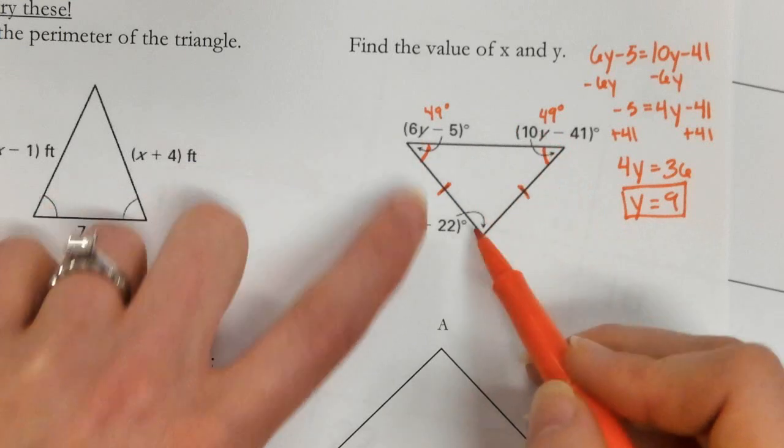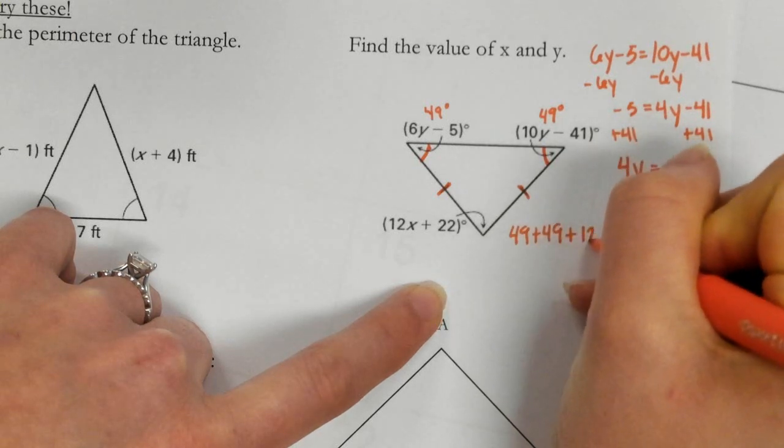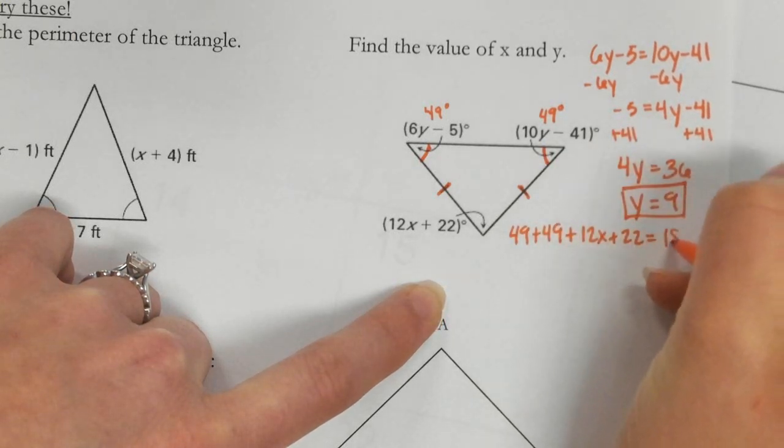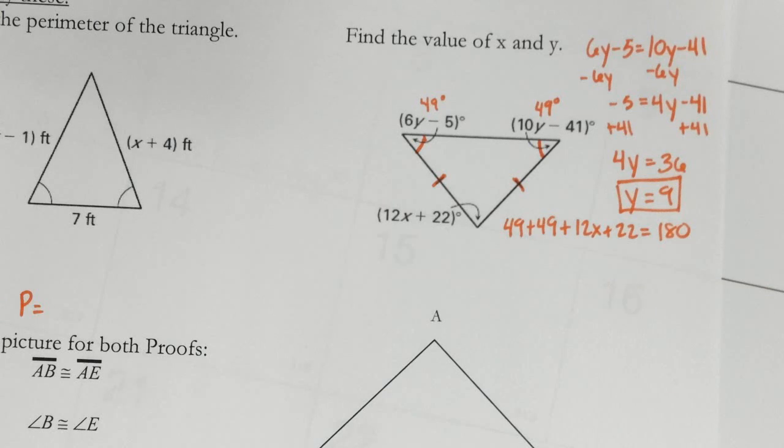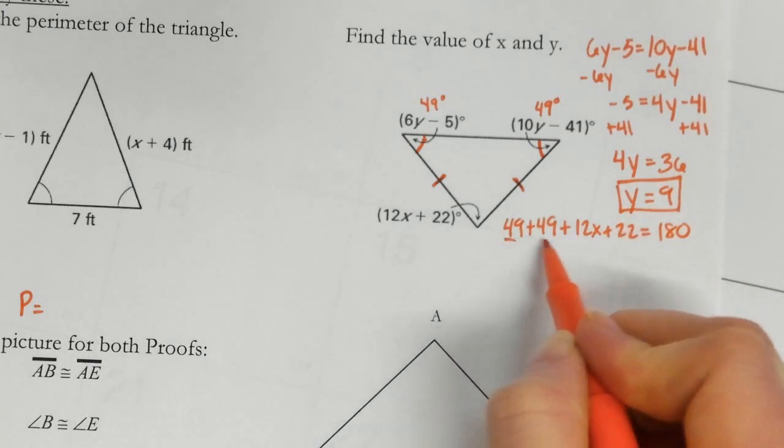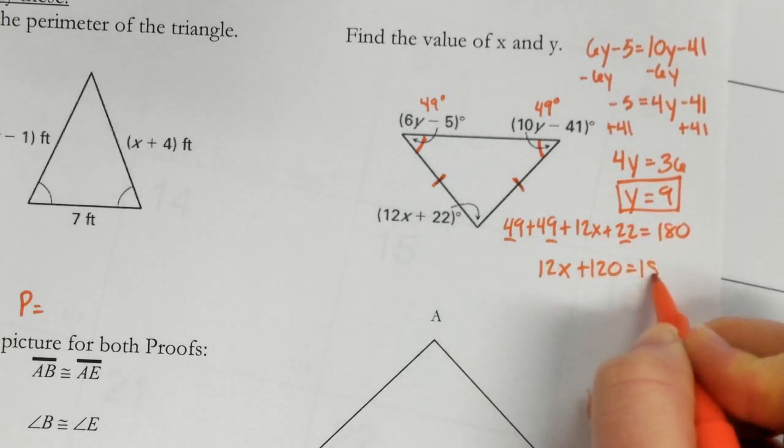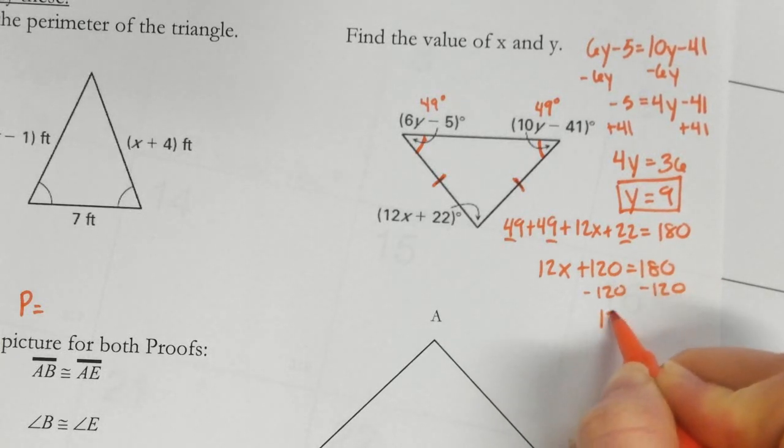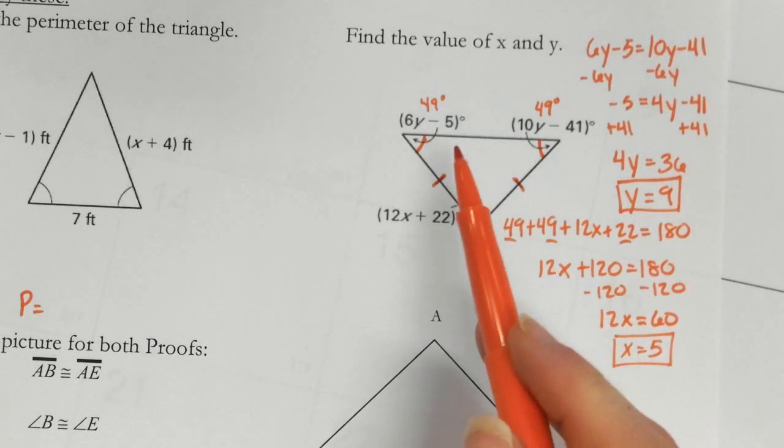Well, now if I know two of the three angles, I can add them up to 180. So 49 plus 49 plus 12x plus 22 equals 180. So don't forget, all angles add up to 180. So 49 plus 49 plus 22 is all my like terms. So I get 60 divided by 12 is going to be 5. So those are my x and my y.